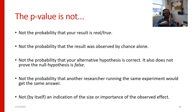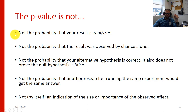The p-value also doesn't speak to the probability that another researcher running the same experiment would get the same answer. If we get a statistically significant result, that doesn't mean another researcher running the same experiment would also get a statistically significant result. P-values fluctuate quite a bit as a function of effect size, variance, and sample size. To think about the probability that another researcher would get a similar result, we actually have to consider statistical power.